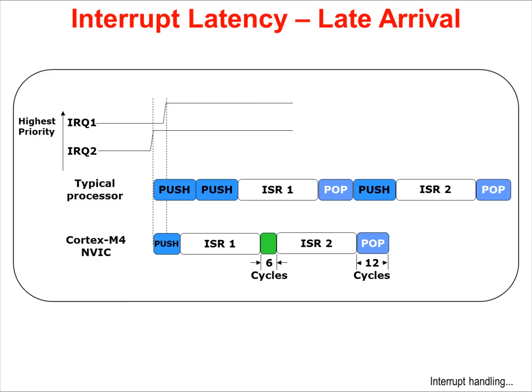The next NVIC feature is late arrival. In this case, the lower priority interrupt IRQ2 goes off just before the higher priority interrupt. In a typical processor, it would be pushing the status for IRQ2, and as soon as it detected the higher priority interrupt, it would finish the push, start a second push, and go through the entire normal sequence — the cycles for the extra push are completely wasted. In the Cortex-M4, the NVIC detects the higher priority interrupt and simply transfers execution to ISR1 instead of ISR2, running ISR1 first. At the end of that ISR, it tail-chains into ISR2 — again a significant savings in interrupt latency.